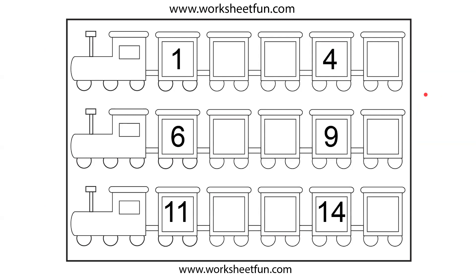Now let us see this worksheet. In this worksheet, the numbers are given and you have to guess what will be the number if we skip by one. So if I am at one right now and I skip by one, I will reach two. Then I skip one more — I will reach three. If I skip by one more, I will reach four. Now one more jump, I will reach five. Like this, you can do this entire worksheet.